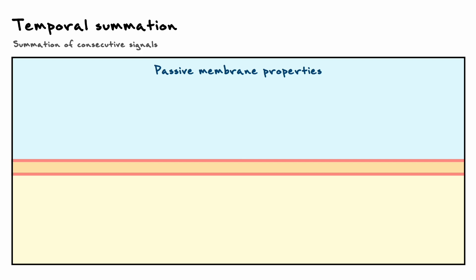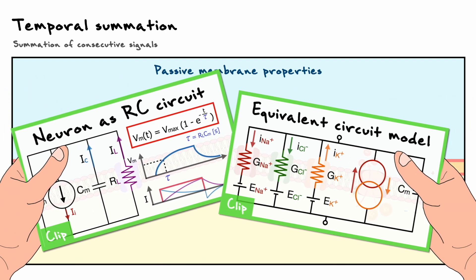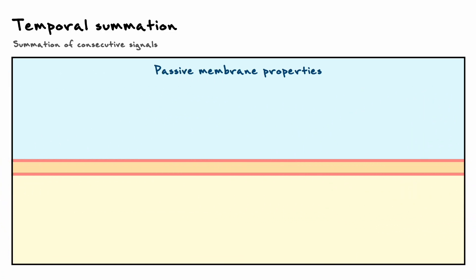If I go too quickly on these concepts in this discussion, I recommend watching the videos on the equivalent circuit model and the RC neuron to get additional insights on these concepts. We've established that there are three fundamental passive membrane properties which govern the temporal and spatial time course of passive propagation.